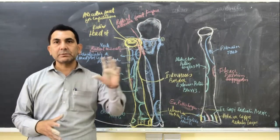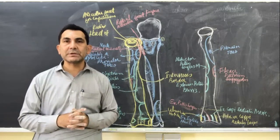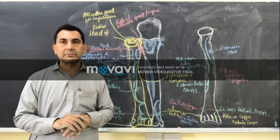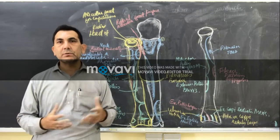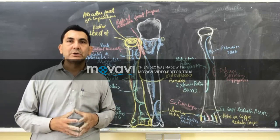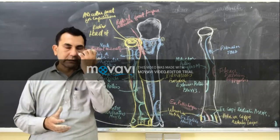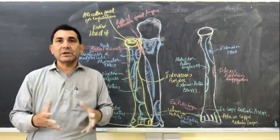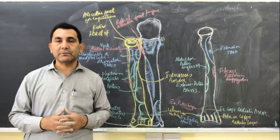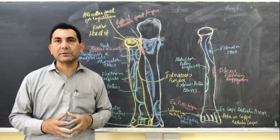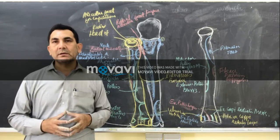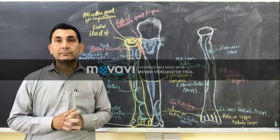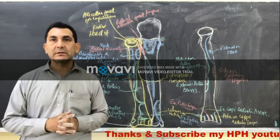This is all about the radius bone which we learned today, including the upper extremity, the different parts and surfaces, and the lower extremity. If you have any queries or questions, you can email me or write in the comments on my YouTube channel. Please subscribe to my YouTube channel for learning anatomy and physiology of the skeletal system. Thank you.